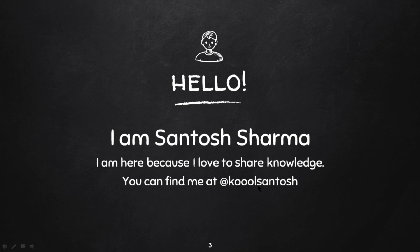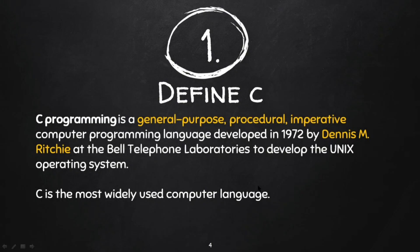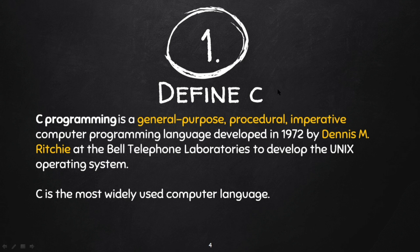First topic: Define C. C programming is a General Purpose, Procedural, Imperative Computer Programming Language.